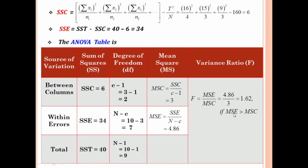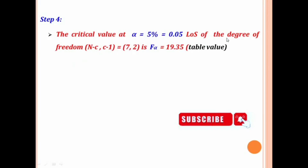The variance ratio should always be greater than 1. The degree of freedom is (N−C, C−1) = (7, 2). Using the statistical table with degree of freedom 7 comma 2, the critical value is 19.35. Step 4: The critical value at alpha equal to 5% with degree of freedom (7, 2) is 19.35.